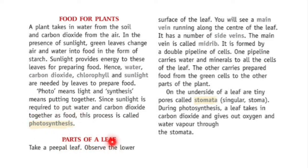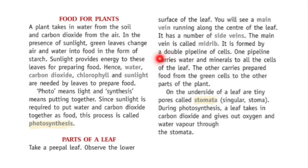The next part is parts of a leaf. Take a leaf and observe the lower surface. You will see a main vein running along the center of the leaf with a number of side veins. The main vein is called the midrib. It is formed by a double pipeline of cells — one pipeline carries water and minerals to all the cells of the leaf, and the other carries prepared food from the green cells to other parts of the plant.